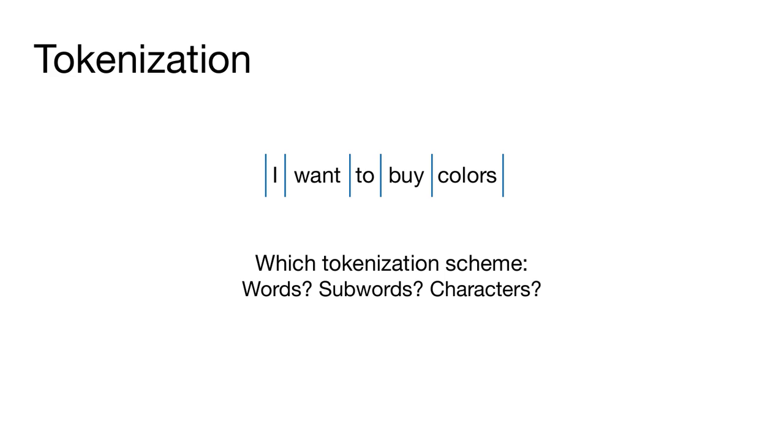We could use words themselves, or we could use characters. Of course, in modern language modeling, it's common to use subwords, which are automatically constructed groups of contiguous characters.